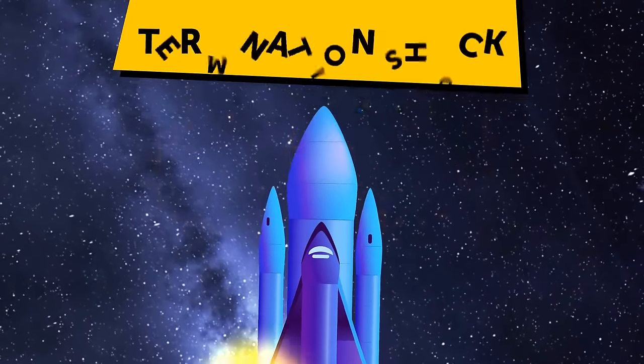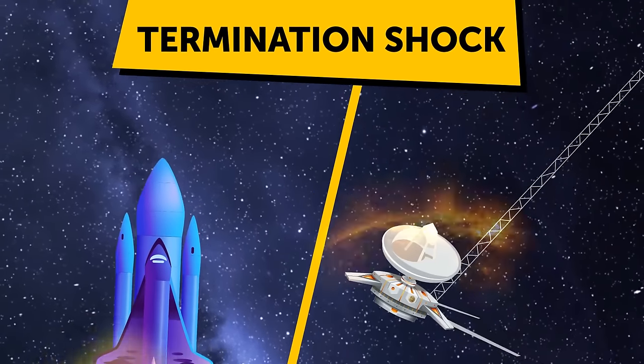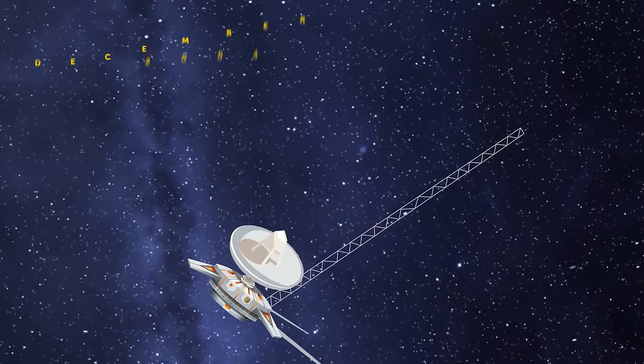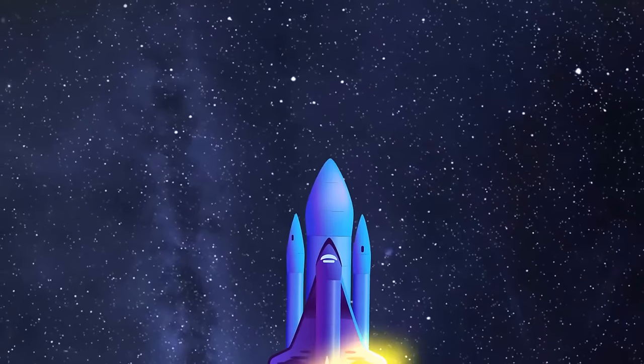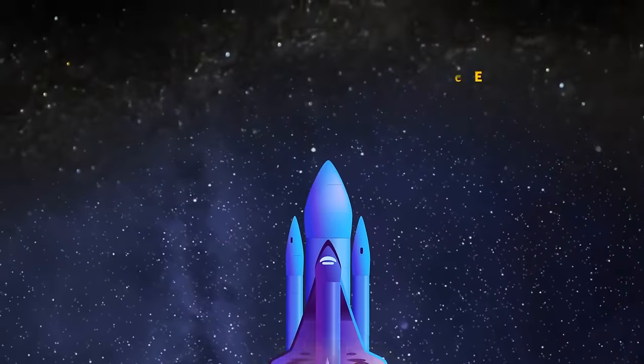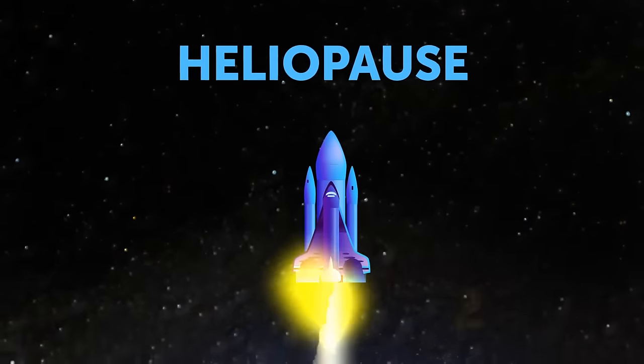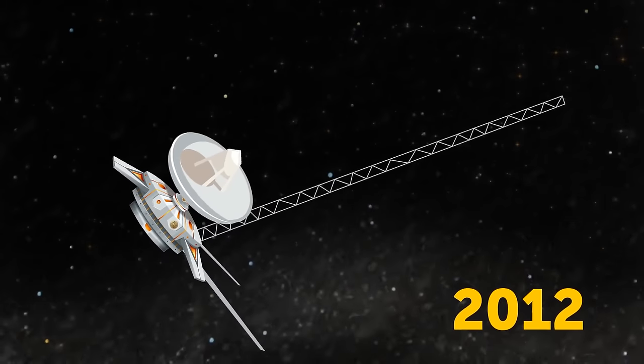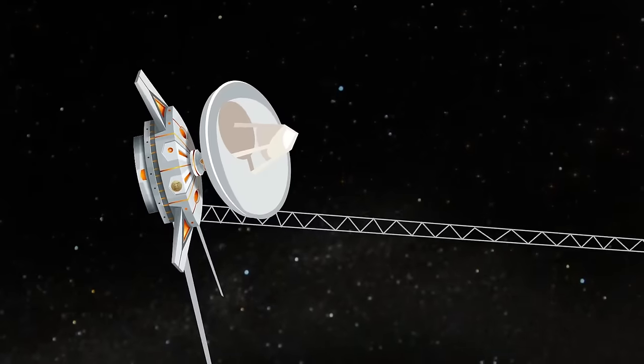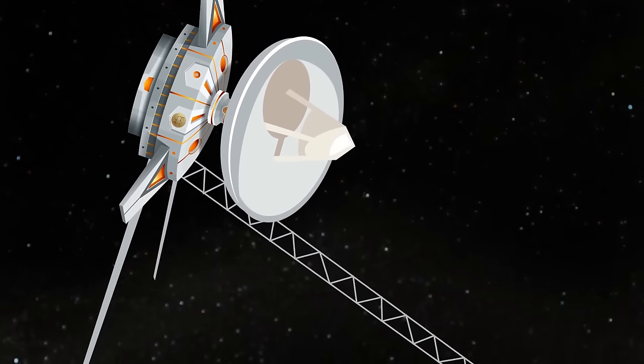It contains debris and space objects of different sizes and shapes. The biggest of them is Ceres. Its surface is slightly larger than the area of Argentina, and its weight is about one percent of the moons. The total weight of the entire asteroid belt is 25 times less than the moons.